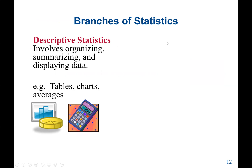Now let's talk about the branches of statistics. We may identify three: descriptive statistics, inferential statistics, and probability. Normally, we combine these into two main branches — descriptive and inferential — with probability considered part of inferential statistics. Inferential statistics uses a sample to perform testing, and the result is applied to the population. Descriptive statistics is used to understand and summarize our data.